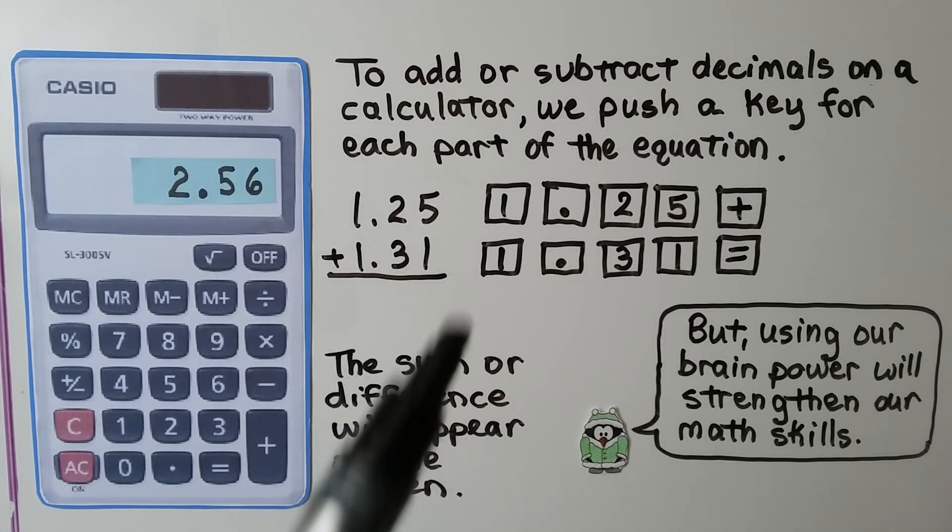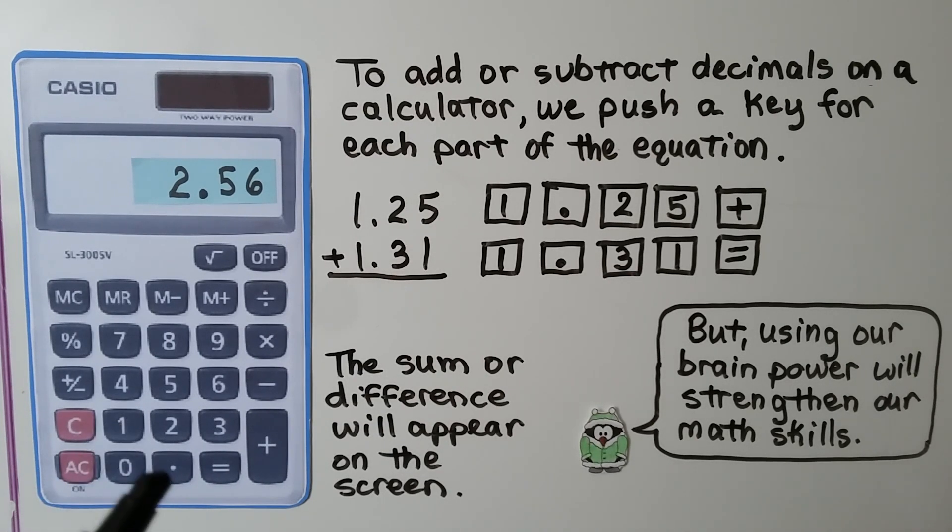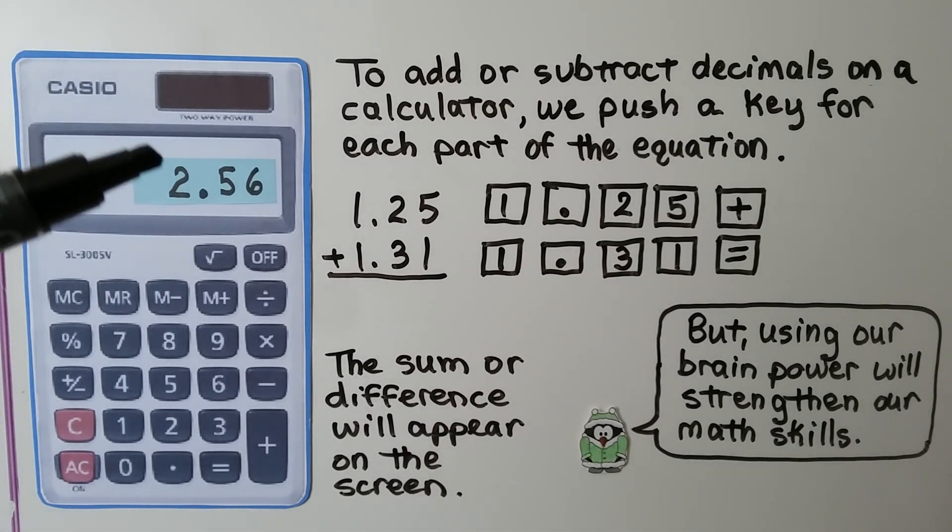We add this decimal. We push 1, the decimal point, the 3, and then the 1, and then we push equal. And the sum or difference will appear on the screen. But using our brain power will strengthen our math skills.